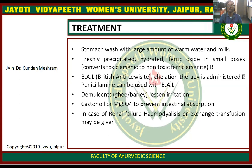Treatment: stomach wash with a large amount of warm water and milk. Freshly precipitated hydrated ferric oxide in small doses converts toxic arsenic to non-toxic ferric arsenide. Then BAL (British Anti-Lewisite) chelation therapy is administered. Penicillamine can also be used with BAL. Demulcents like ghee and barley lessen irritation. Castor oil or magnesium sulfate (MgSO4) is used to prevent intestinal absorption. In cases of renal failure, hemodialysis or exchange transfusion may be given.